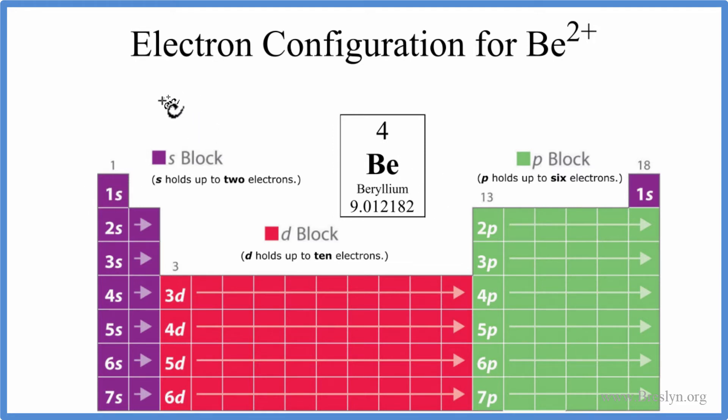So we start out with 1s, we have 1s1, 1s2, and s can hold up to two electrons so with these two electrons it's full. So we have 1s, then we go to 2s.